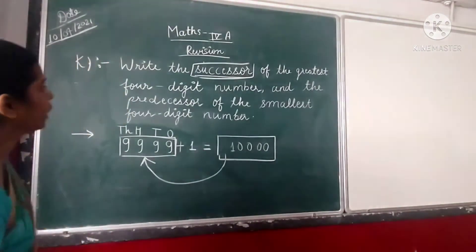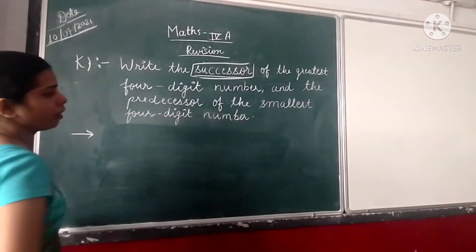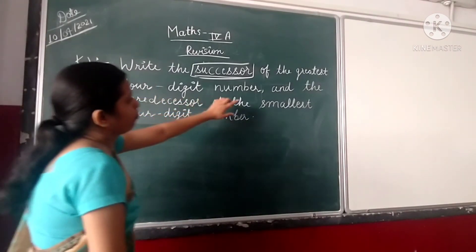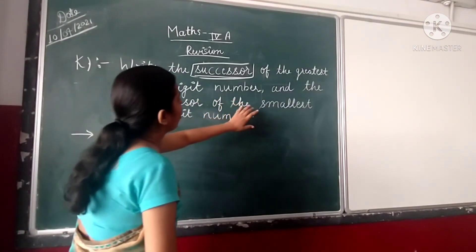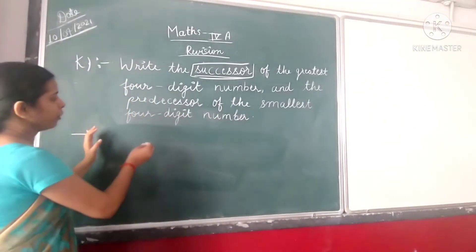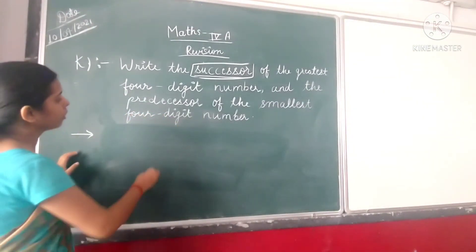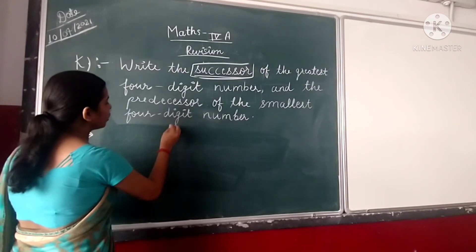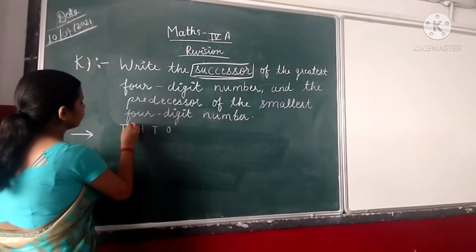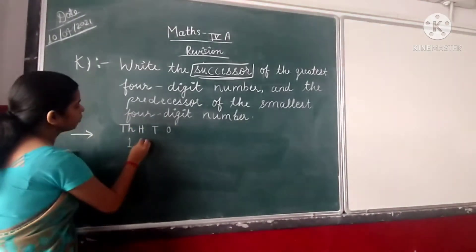In our second part, it says: find the predecessor of the smallest 4-digit number. We know that the smallest 4-digit number has digits 1, 10, 100, and 1000. And the smallest 4-digit number is 1000. So we have to find what is the predecessor.